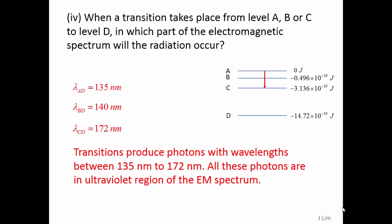Transitions produce photons with wavelengths between 135 nanometers to 172 nanometers. All these photons are in the ultraviolet region of the electromagnetic spectrum.